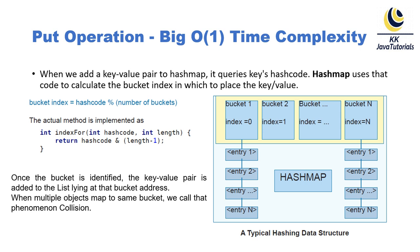Only with a properly overridden equals() and hashCode() method can you maintain the put operation complexity of O(1), as well as the performance of get(). If you do not have proper hashCode() and equals() methods, there is a probability that a single bucket can have more than one element, and the performance of your application will decrease.